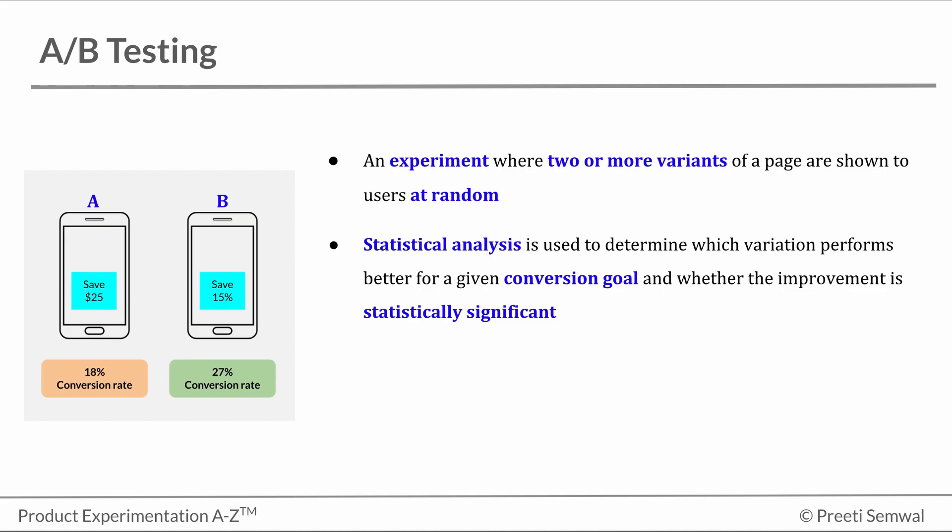We will be going into a lot of detail on the topic of statistical significance in section 2. For now, you can assume that statistically significant means whether the improvement is valid from a statistics point of view. Conversion goals can be around clicks, subscriptions, or purchases, for example.